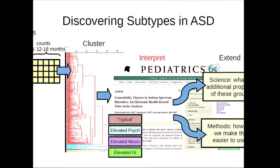What we found in this particular case, after lots of hands looking at all these patients, is that there seems to be a group elevated in psychiatric disorders, another group with elevated neurological disorders, another with elevated GI disorders, and others that didn't seem to have anything particular going on.